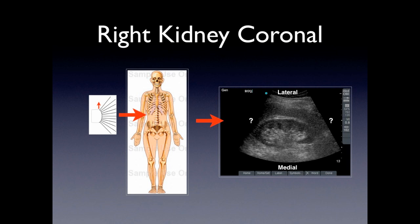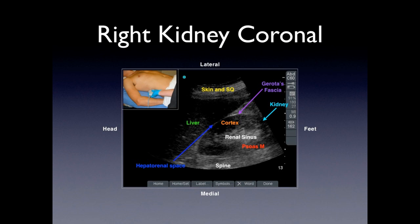You have the lateral side and the medial side — lateral is where you place your probe. With your indicator pointing towards the head, that dot on the screen tells you that the head is going to be on the left side of the screen and the feet on the opposite side.